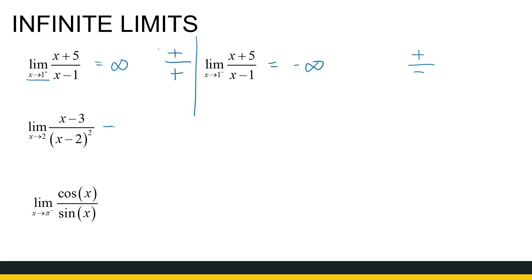Let's go a bit faster. As x approaches two — and I'm not specifying a side because the denominator is squared — both from the positive and negative side, that denominator is always going to be positive but very close to zero. My numerator is always going to be negative. So this goes to minus infinity, meaning the function has an asymptote at x = 2, and both sides of the graph go towards minus infinity.